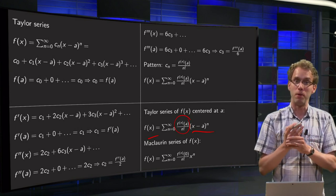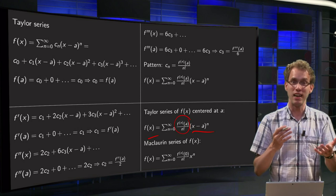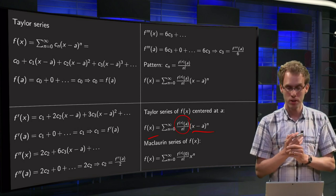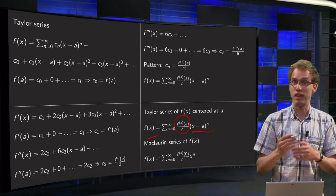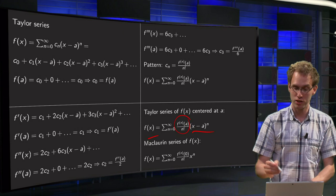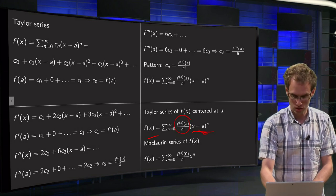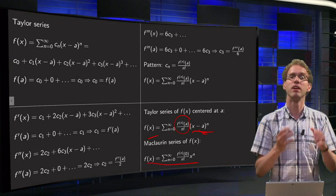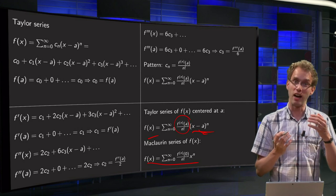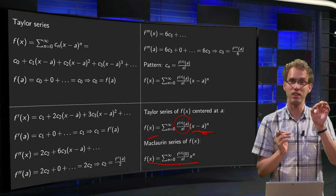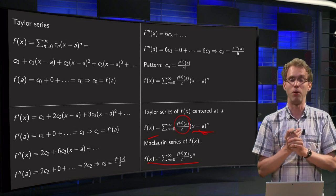Now the Maclaurin series is a Taylor series but then centered at 0. So the Maclaurin series of f(x) is actually a special case of a Taylor series, but then with a equals 0, so that's just this expression over here. So, now you know what the Taylor series is and how to compute it: just keep on differentiating and plug in your center point.